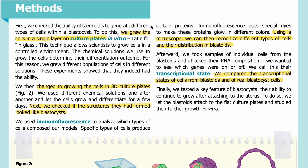Methods: First, we checked the ability of stem cells to generate different types of cells within a blastocyst. To do this, we grew the cells in a single layer on culture plates in vitro — Latin for 'in glass.' This technique allows scientists to grow cells in a controlled environment. The chemical solutions we use to grow the cells determine their differentiation outcome. For this reason, we grew different populations of cells in different solutions. These experiments showed that they indeed had the ability. We then changed to growing the cells in 3D culture plates, using different chemical solutions one after another, and let the cells grow and differentiate for a few days.